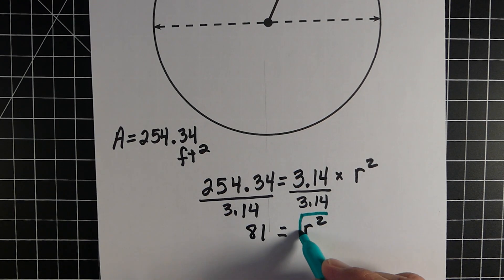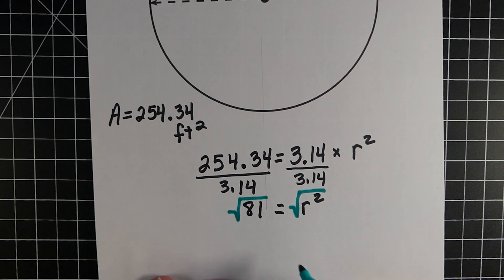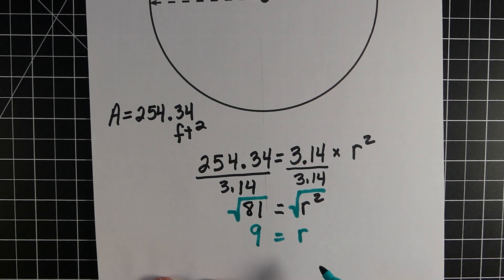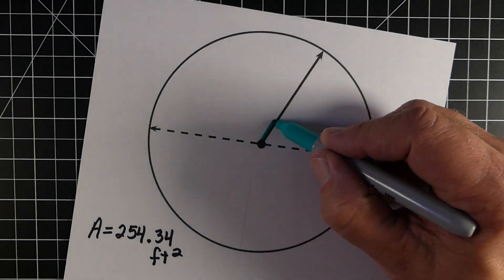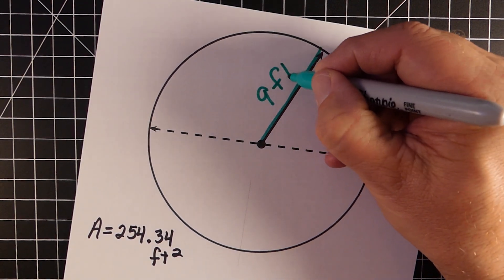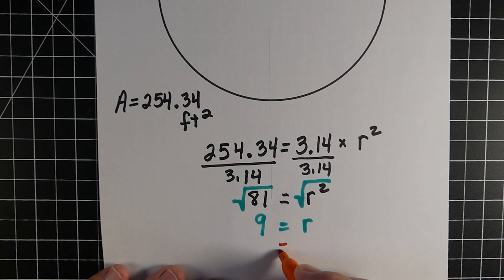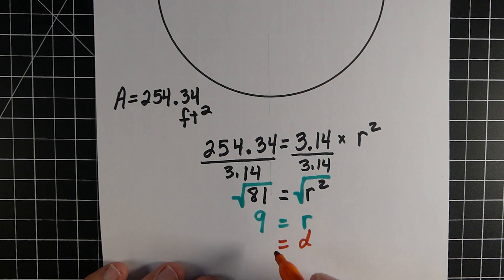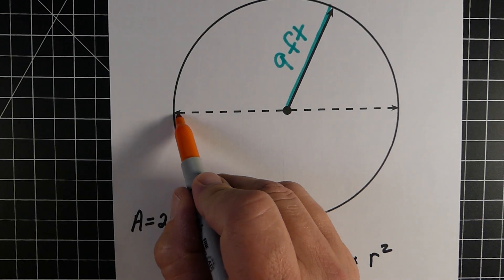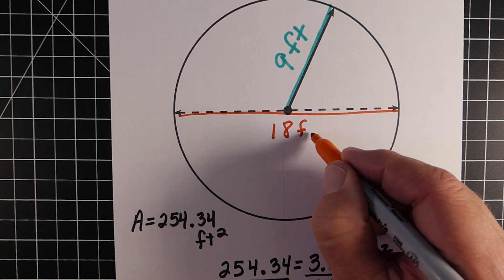Now 81 is not our radius — it's what the radius squared equals. So we find the square root of both sides. The square root of r squared is just r, and the square root of 81 is 9. So this circle has a radius of 9 feet. The diameter is the distance all the way across, which is double the radius, so the diameter is 18 feet.